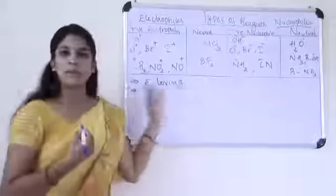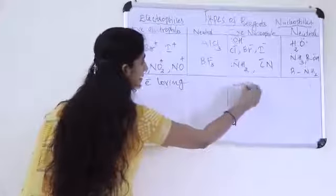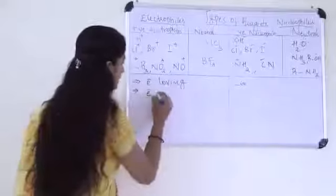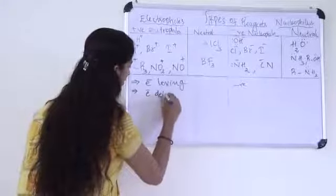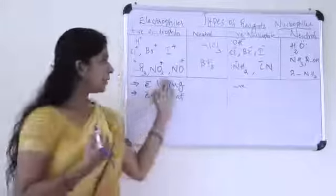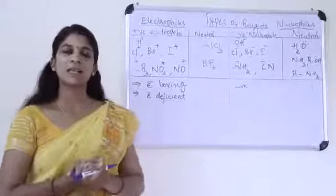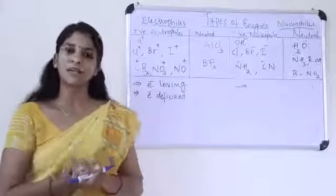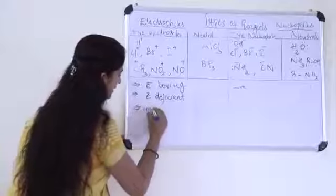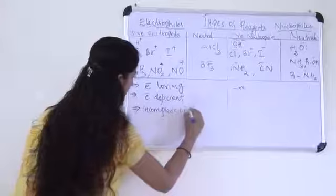Electrophiles are the species that are electron lovers — that is, they are electron deficient. They have incomplete octets.